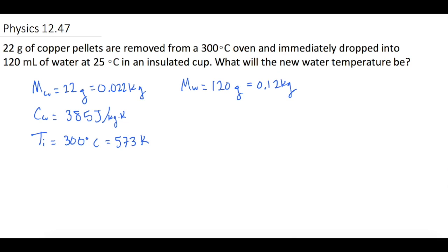The specific heat of water is 4190 joules per kilogram times K, and the initial temperature of water is 25 degrees Celsius, which is 298 Kelvin.